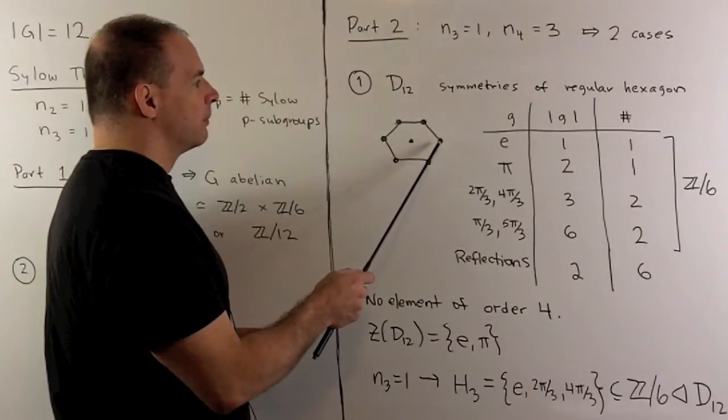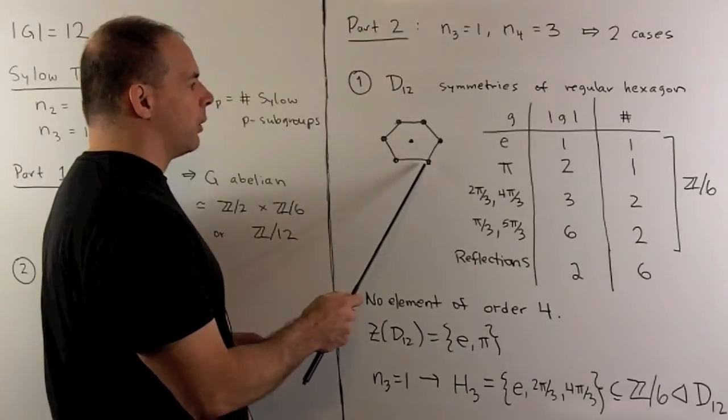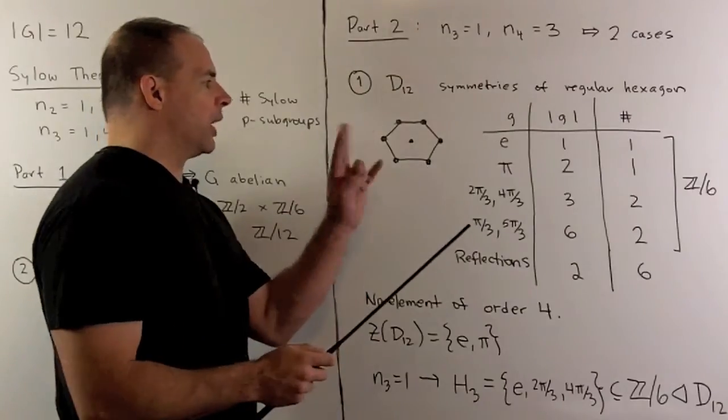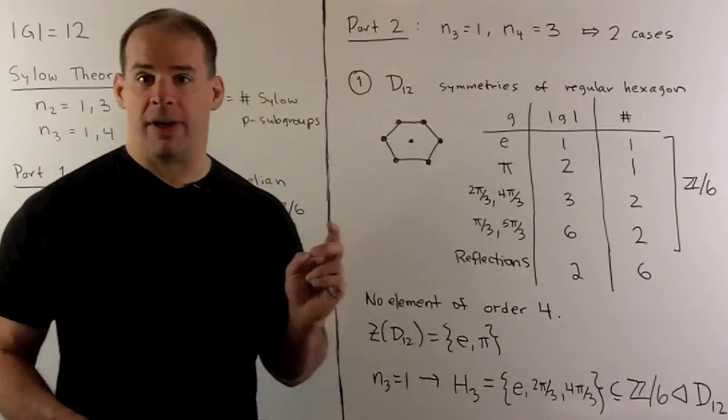If I pick a vertex, there's six possibilities for where we can send it, and then once we've chosen that vertex, there are two ways to orient. So we have 12 elements.